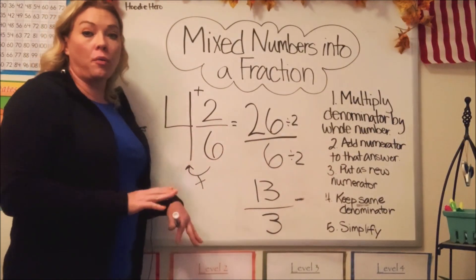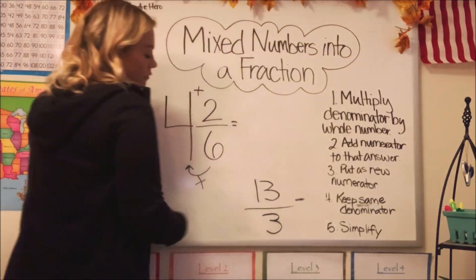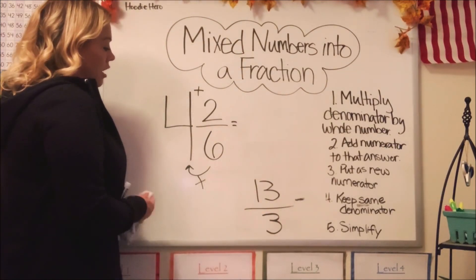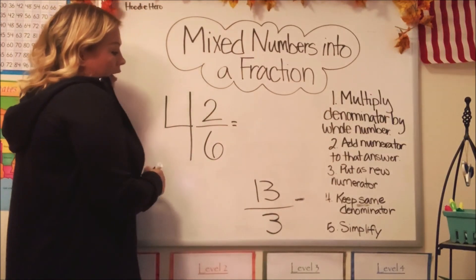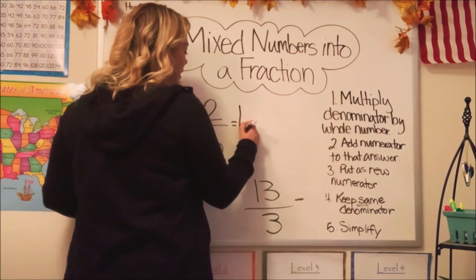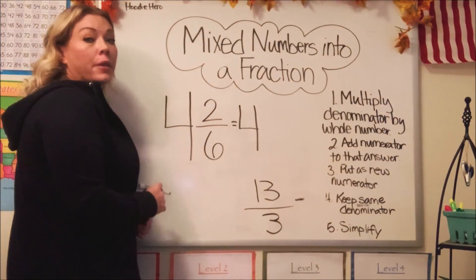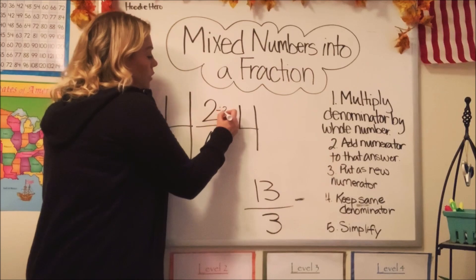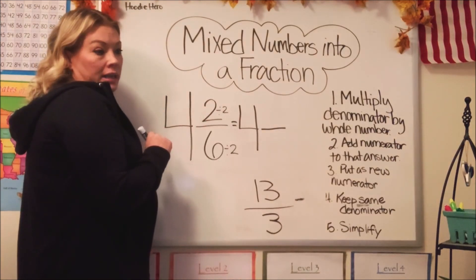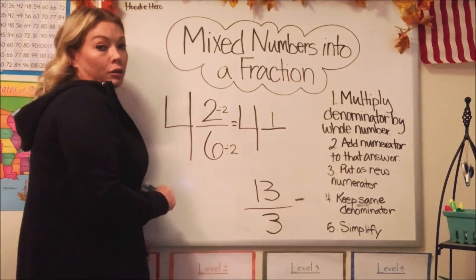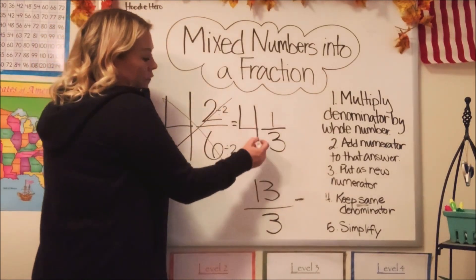Now let's try it the other way — simplifying first — and see if we get the same answer of 13 thirds. We have four and two-sixths. We're going to keep the whole number the same, it's still four. We simplify two-sixths: both are even, so we divide each by two. Two divided by two is one, and six divided by two is three. So now we're starting with four and one-third.